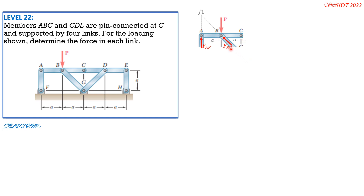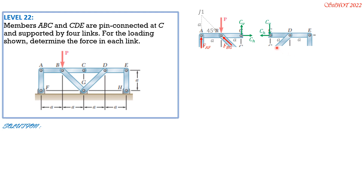The lines of action of F_BG and F_AF meet at G1 because the angle is 45 degrees. The distance above A is A, and these are the component reactions at C. On the other side, by action-reaction principle (oppositely directed), we assume F_DG to be in compression and F_EH to be in tension. Their lines of action meet at J2, and this distance is also A because that angle is also 45 degrees.